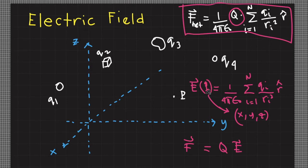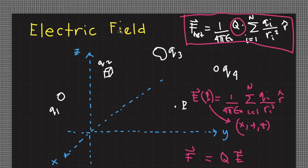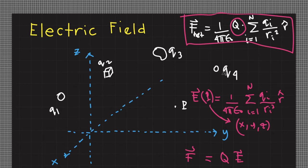Once we define electric field with this equation, we can just multiply the electric field of source charges by a test charge Q to calculate the electric force on that test charge. The electric field is the influence of source charges at point P — when we place any test charge Q on that point, we can calculate the resulting electric force. We study electric field because often we are given information about source charges and want to know how they alter their surroundings, and having the electric field allows easy calculation of force for any given test charge.